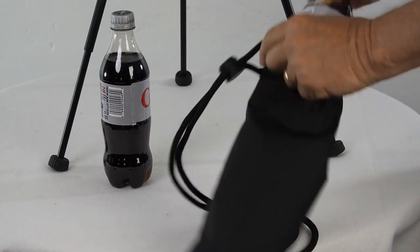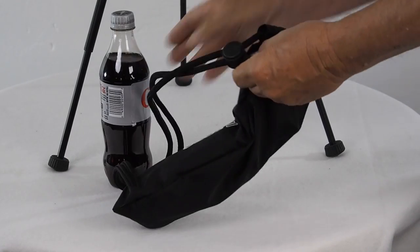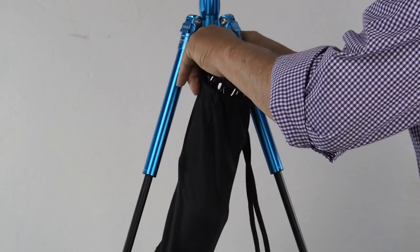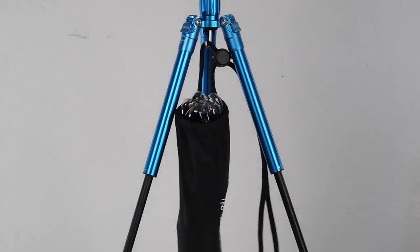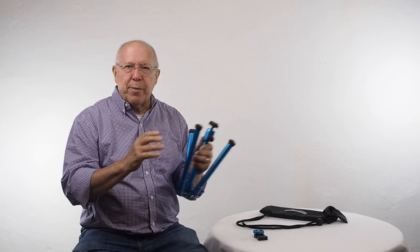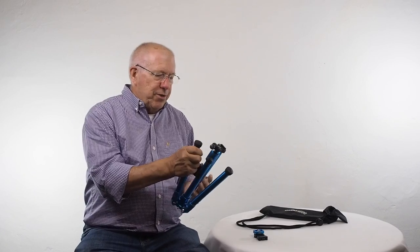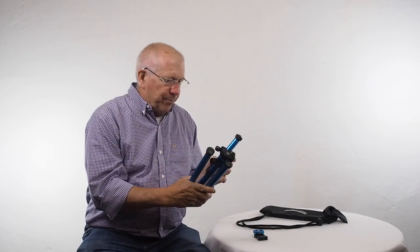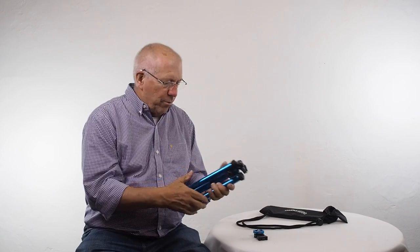I think all their tripods have this feature. So you can pull this hook down and attach something weighty to it. As you can see in the picture, I found two Coke bottles, I put them inside the bag, and I hung that from the tripod center. So that would add stability to your tripod if you're concerned about it being knocked over in some way. So that's a nice feature that is there and ready to use.